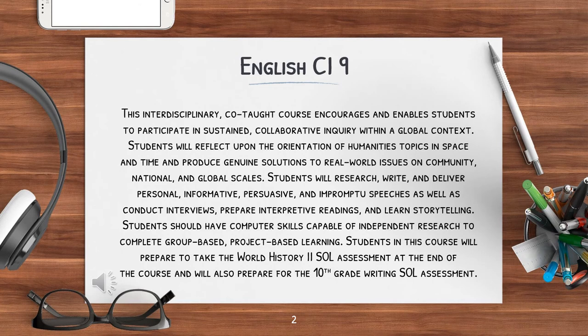English Commonwealth Innovation 9: This interdisciplinary co-taught course encourages and enables students to participate in sustained, collaborative inquiry within a global context. Students will reflect upon the orientation of humanities topics in space and time and produce genuine solutions to real-world issues on community, national, and global scales.